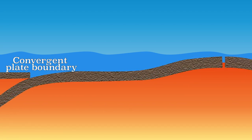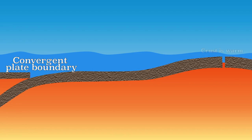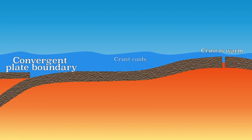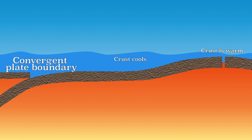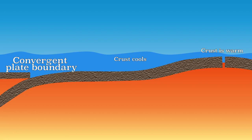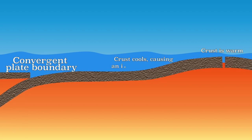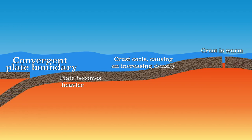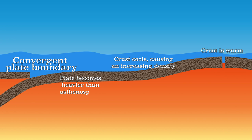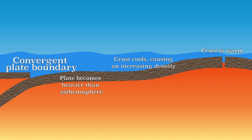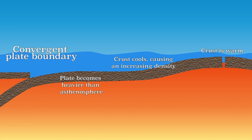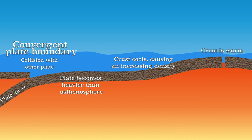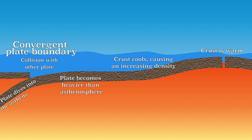The newly formed oceanic crust cools as it moves away from the mid-oceanic ridge. The density of the plate increases due to cooling, making the plate heavier than the underlying asthenosphere. Therefore, if the oceanic plate collides with another plate, the oceanic plate will dive into the asthenosphere.